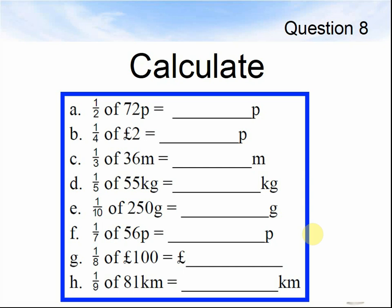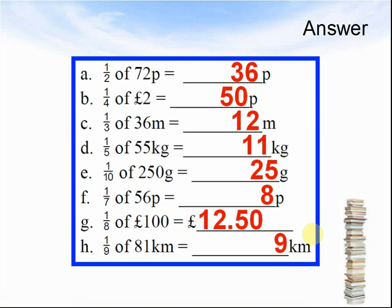The answers are: a. Half of 72 feet equals 36 feet. b. Quarter of 2 pounds equals 50 pence. c. One-third of 36 metres equals 12 metres. d. One-fifth of 55 kilograms equals 11 kilograms. e. One-tenth of 250 grams equals 25 grams. f. One-seventh of 56 feet equals 8 feet. g. One-eighth of 100 pounds is 12 pounds 50. h. One-ninth of 81 kilometres is 9 kilometres.